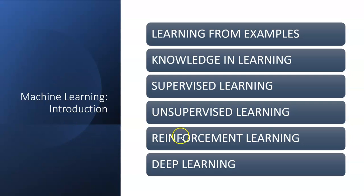We need to divide the data into either two or three parts — for example, a training part and a testing part. Sometimes we also add a validation set in between to avoid overfitting. The key topics in machine learning include knowledge and learning, supervised learning, unsupervised learning, reinforced learning, and deep learning.